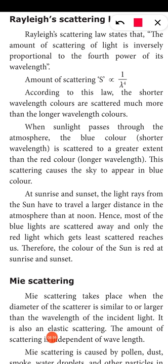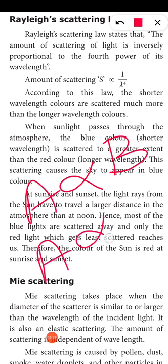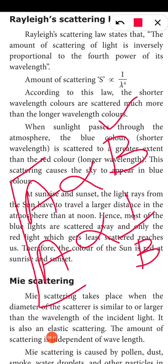Let's understand proportionality: if A is directly proportional to B, when the value of A increases the value of B also increases. If A is inversely proportional to B, when the value of A increases the value of B decreases. So directly proportional means both increase together; inversely proportional means one increases as the other decreases.